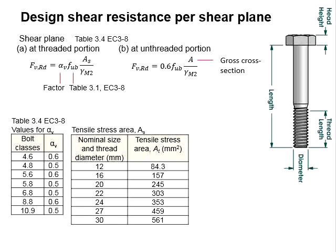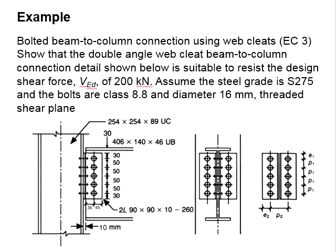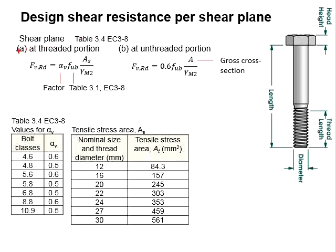Now, we need to determine the shear resistance of the bolt. The question stated that the shear plane will be at the threaded region. With that, we will need to refer to these equations. There will be a factor of alpha_v, which can be referred from the table here. For bolt grade 8.8, the alpha_v is equal to 0.6.